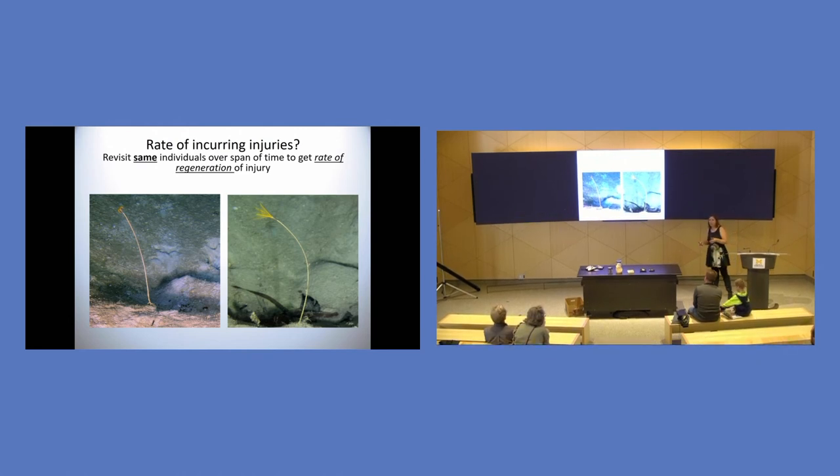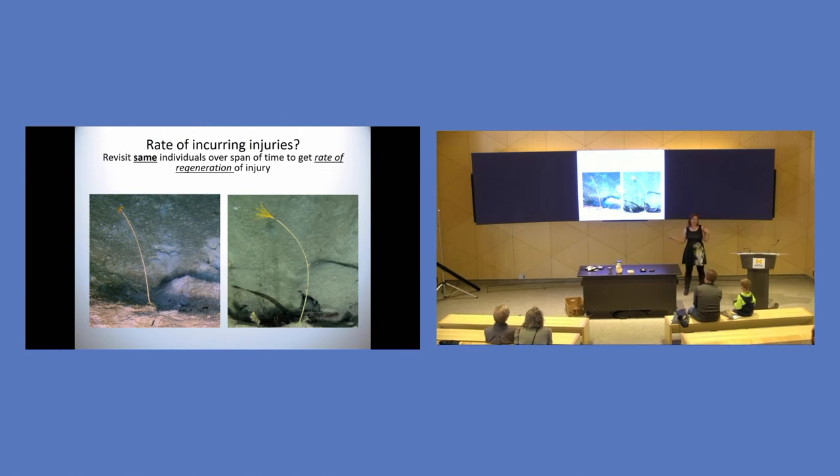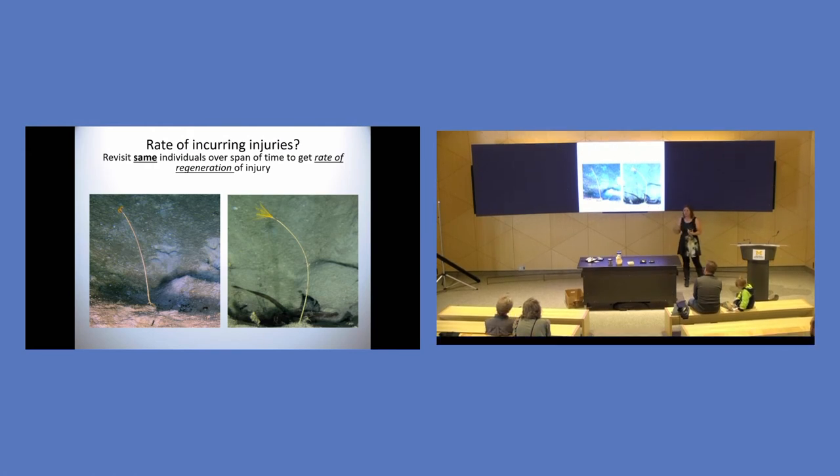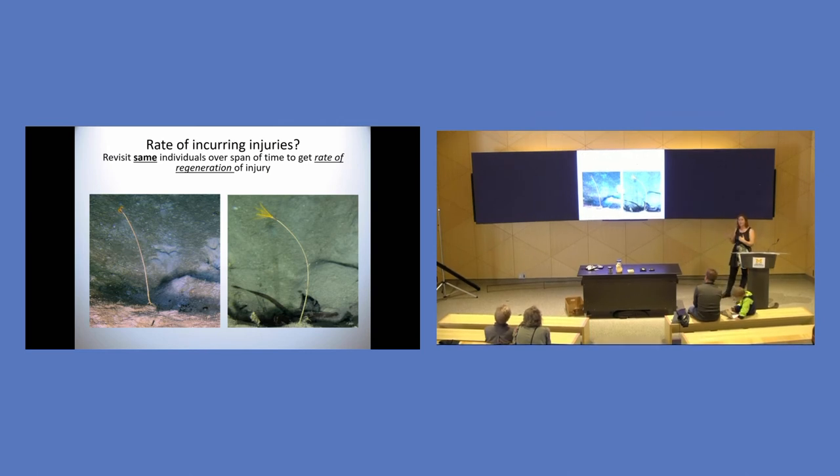Because every time you go at 10 days, you're seeing 25%. Then you go away, they heal, they're getting injured again almost immediately. So when you come back, it's 25% again. They're meeting predators constantly. Versus if it takes you 10 years to recover from an injury and I come by and I see 25%, that means that over the course of 10 years, only 25% of you are meeting a predator. So these turn out to be very different counts. And so when I want to compare across depths, I have to know how fast they're injured and how quickly they regenerate.